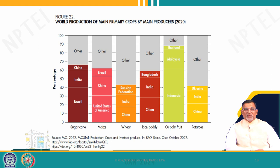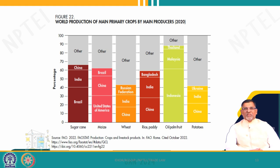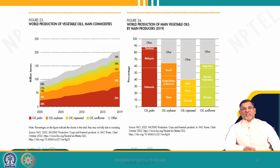But why is Asia still the largest importer? Because in Asia, the first two countries — China and India — have the largest populations in the world, and these people consume these agricultural commodities. That is the logic: they produce them and they also consume them, making them the largest importers.